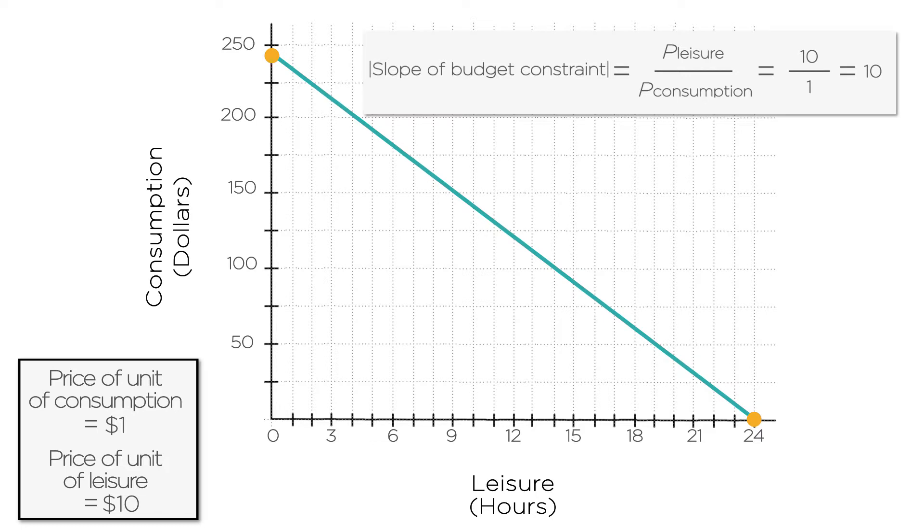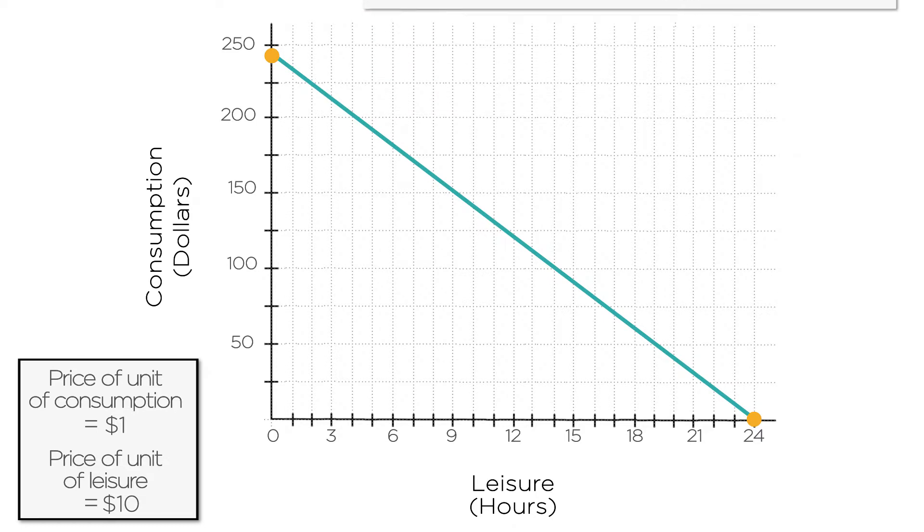So how much leisure should you enjoy given the trade-off? Well, you want to find the combination of leisure and consumption that gives you the highest utility subject to your budget constraint. Graphically, you'll choose the point where the indifference curve is just tangent to your budget constraint. For example, given the preferences we drew last lecture and a wage of $10, you would choose to work at this point A. You'd take 18 hours of leisure, meaning you'd work the remaining six hours of the day. At $10 an hour, you'd get $60 worth of consumption.